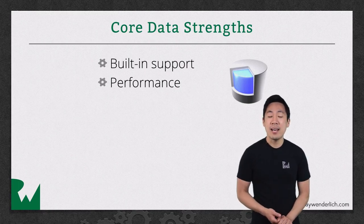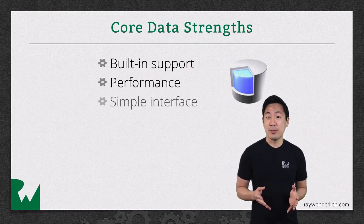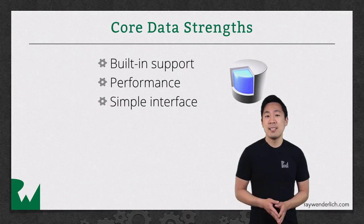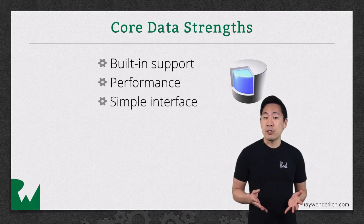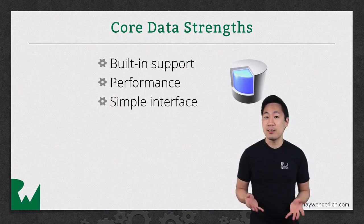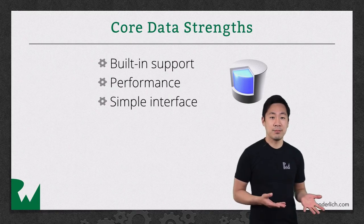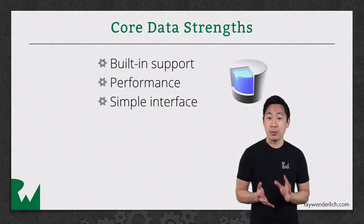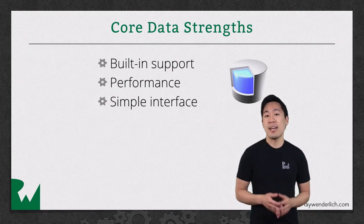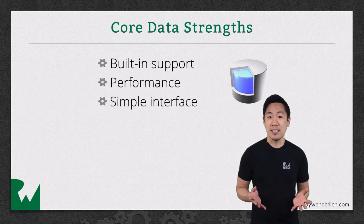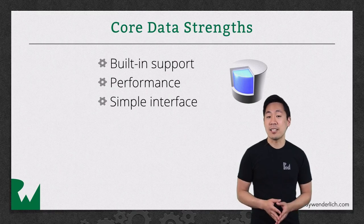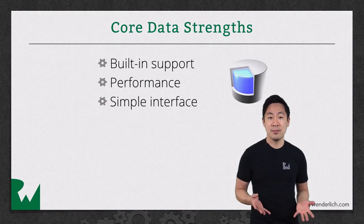Core Data has a simple interface for data access. Data attributes are just like properties with native types such as string and float. Relationships and their inverses are handled seamlessly and look just like typed properties or sets.